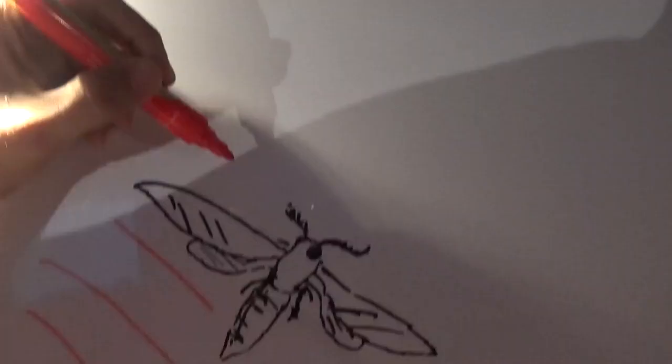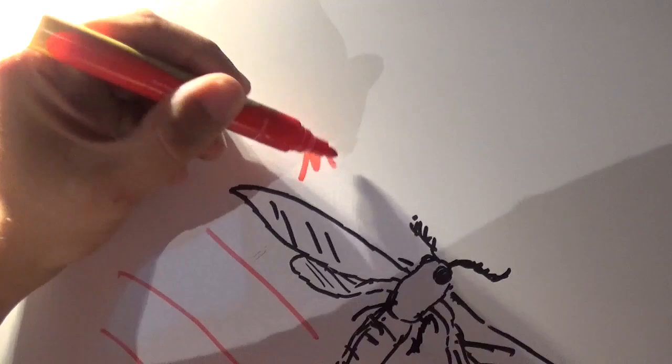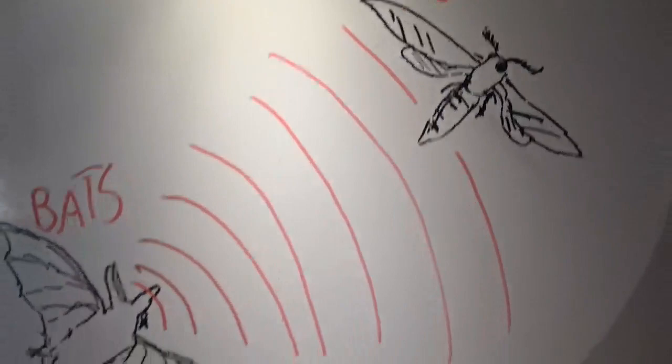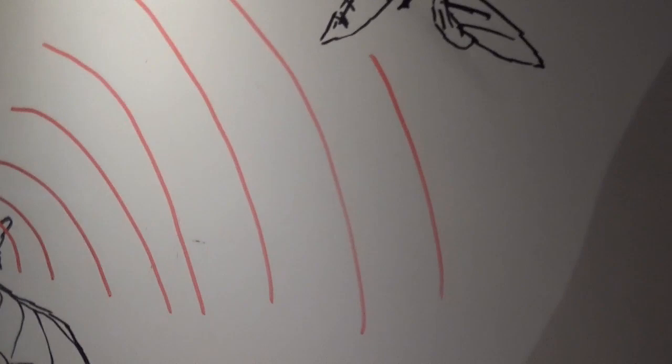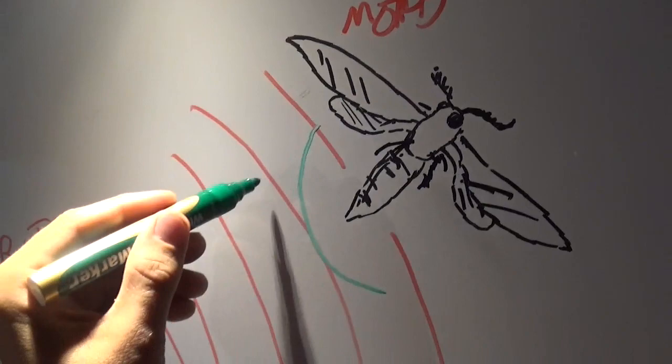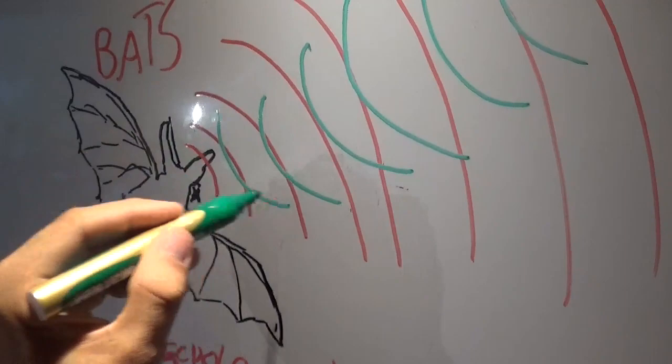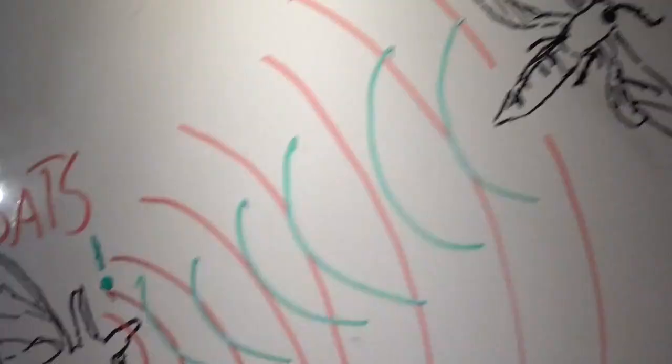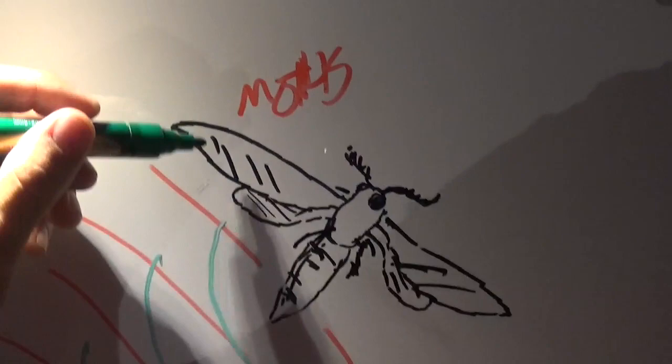What bats basically do is they emit ultrasonic waves, and this ultrasound will reach their victim—and that's of course a beautiful drawing of moths—and what happens if these sound waves reach their target? Well, basically they bounce back from the surface of the insect, they return to the bat.